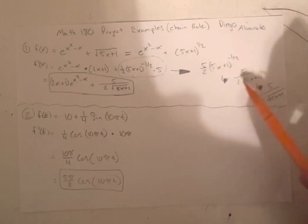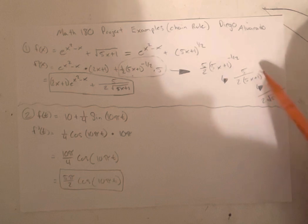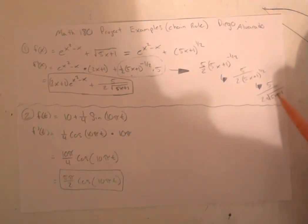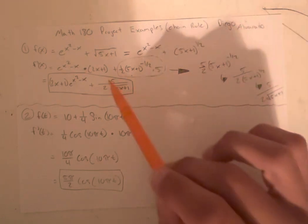And then we can bring this down to the denominator of 5 halves. So it would be 5 over 2 times 5x plus 1 to the one half. And then we can change this one half back to the radical. And then once you get that, you plug this back into the answer along with this part.